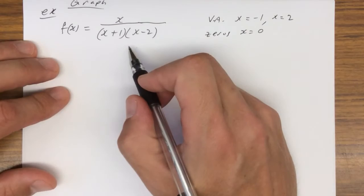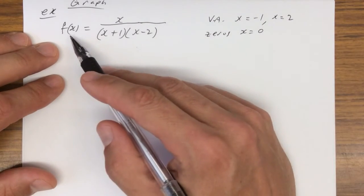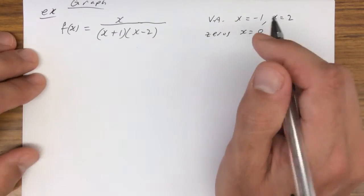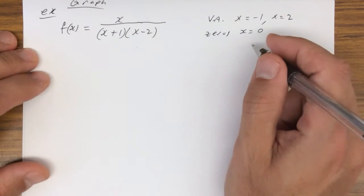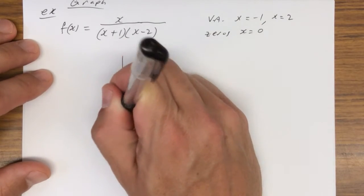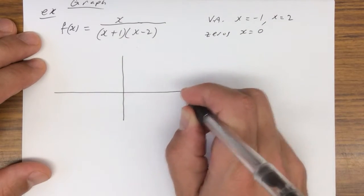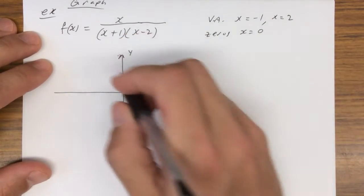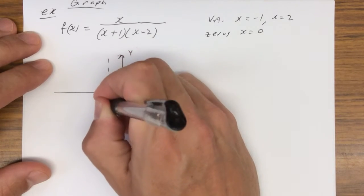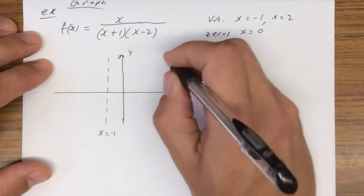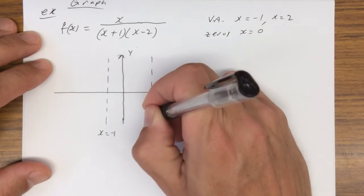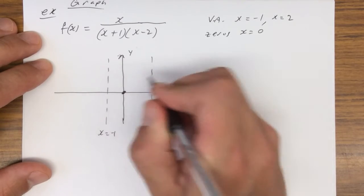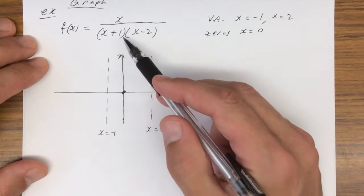Zero divided by anything is 0, so the zero is at x equals 0. You can find a y-intercept by plugging in 0, and we've already got that for this one. So let's try and graph this — plug in the vertical asymptotes at x equals negative 1 and x equals 2, and a zero right here.